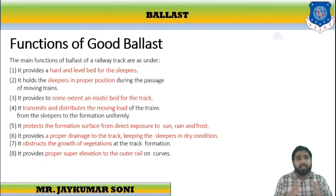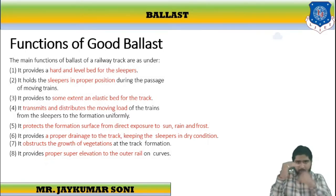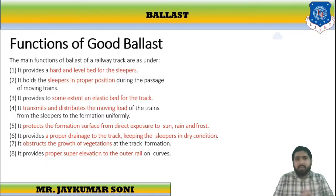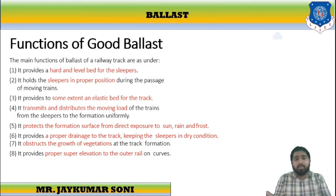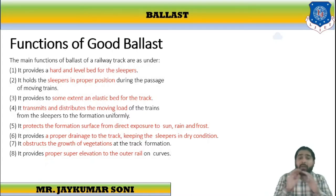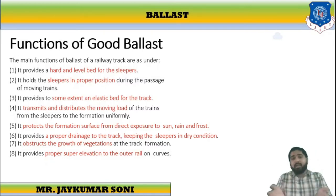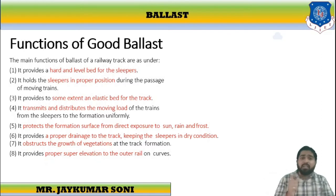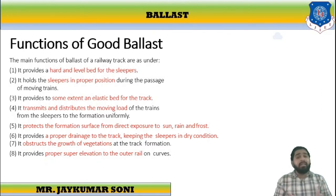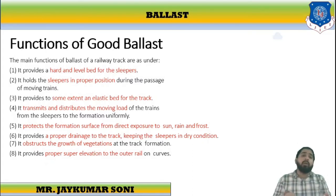Regarding the functions of ballast: first, it provides a hard and level bed for the sleepers, since it is laid below and around the sleeper. It holds the sleeper in proper position during passing trains. It provides some extent of elastic bed. It transmits the load. It protects from sunlight, rain, and frost. It provides super elevation in some cases, and it obstructs the growth of vegetation. Both requirements and functions sections must contain distinct content.